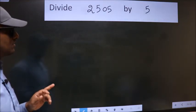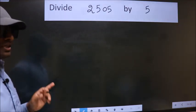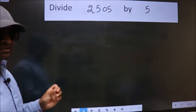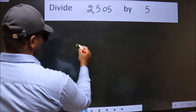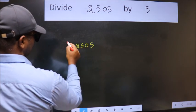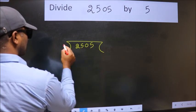Divide 2505 by 5. To do this division we should frame it in this way. 2505 here, 5 here.